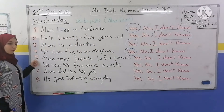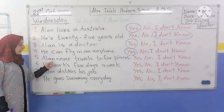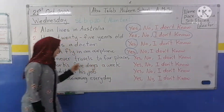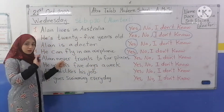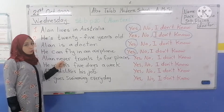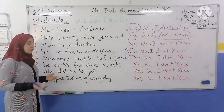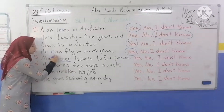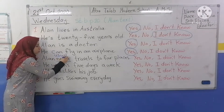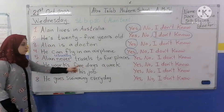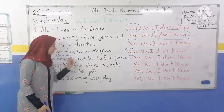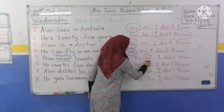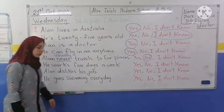Number 5: Alan never travels to far places. No. The correct answer is: Alan usually travels to far places. So circle around No.